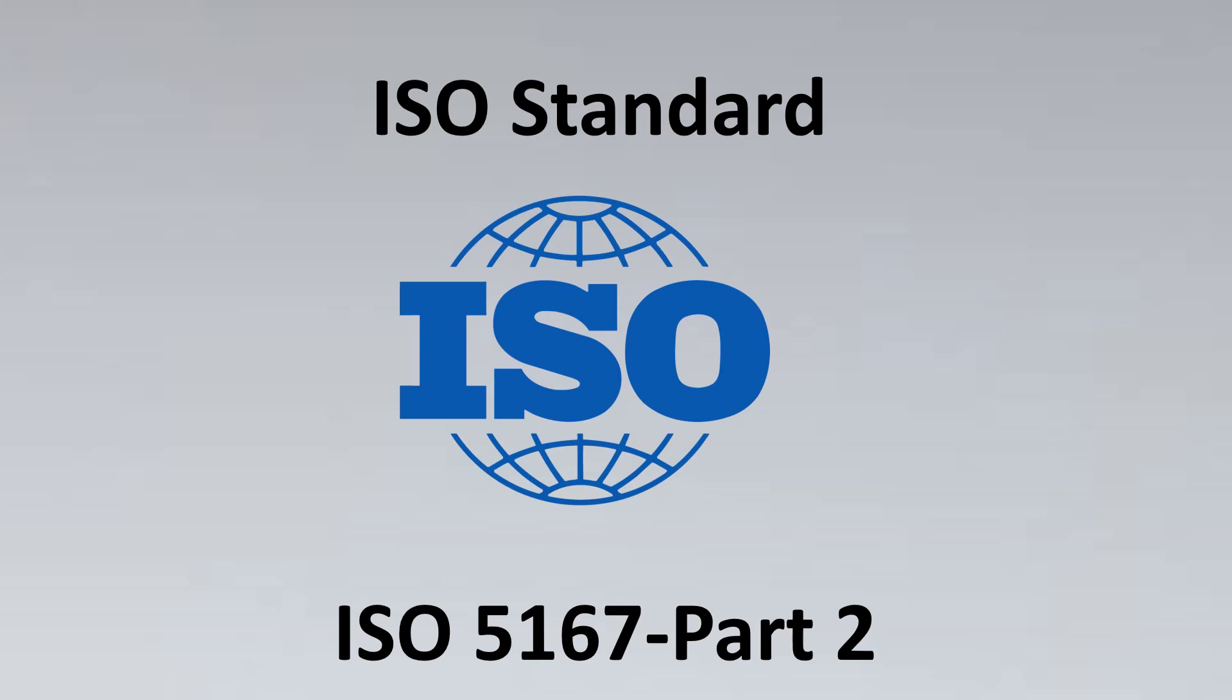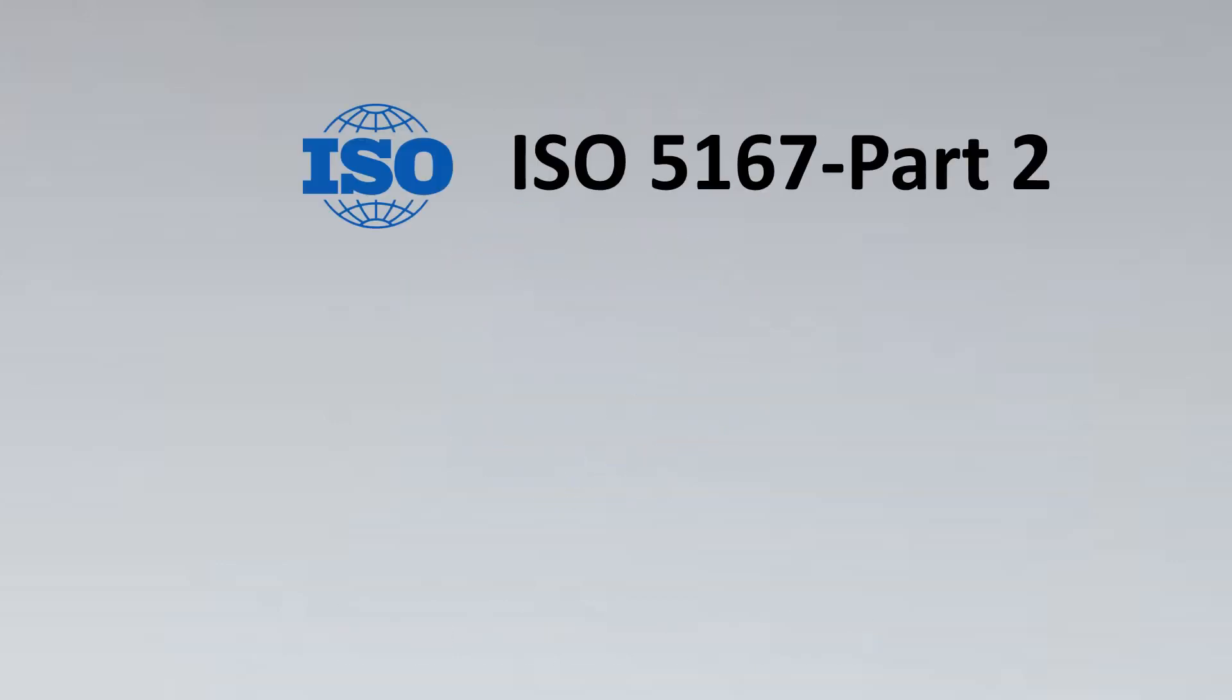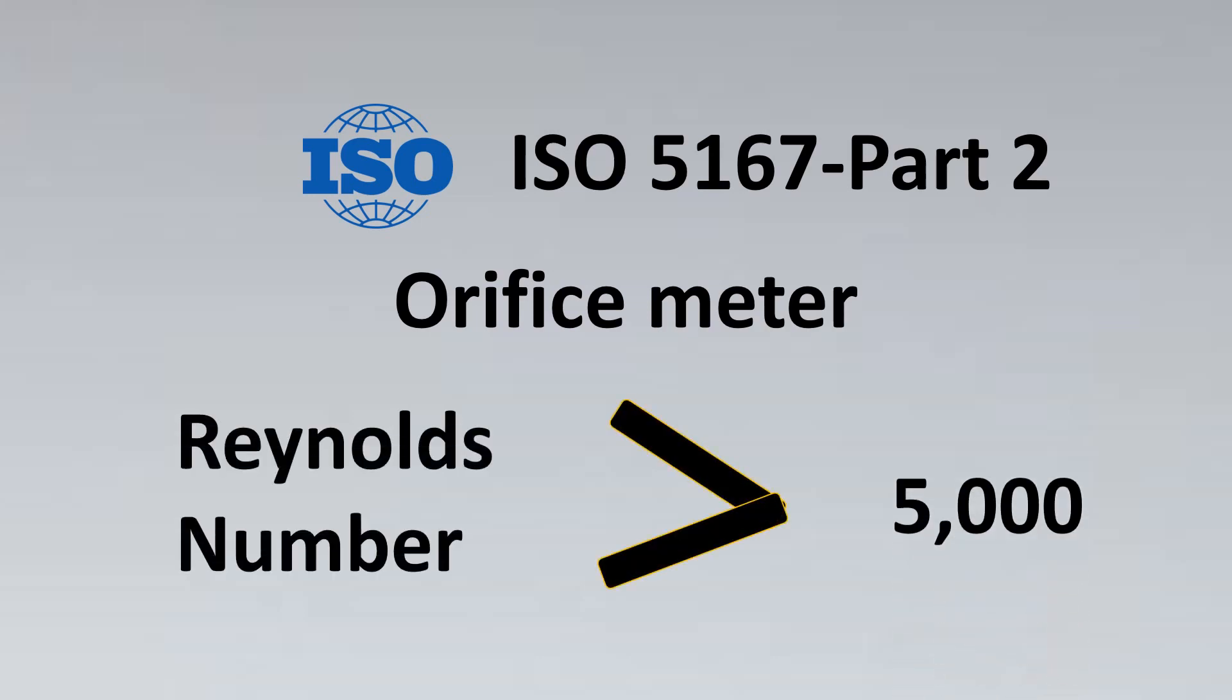And this standard has an amazing observation. It states that the orifice meters should have a Reynolds number that should be greater than 5000. Note that Reynolds number is a dimensionless number. It has no units to it. So if you see here, this 5000 is the minimum criteria if you want your orifice flow meters to comply with this world renowned standard ISO 5167. So if in your application, your Reynolds number is lesser than this, then you might not be able to go for orifice flow meters and you should go for some other flow meter technologies.